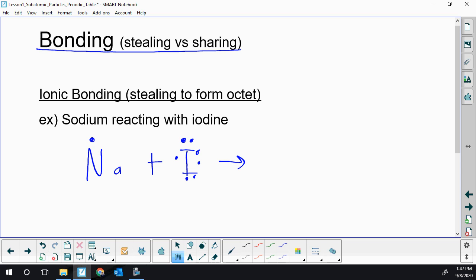When you have this combination of something with one or two dots with something missing one or two dots, you get an ionic reaction, an ionic bonding type of reaction. You get ionic compounds.